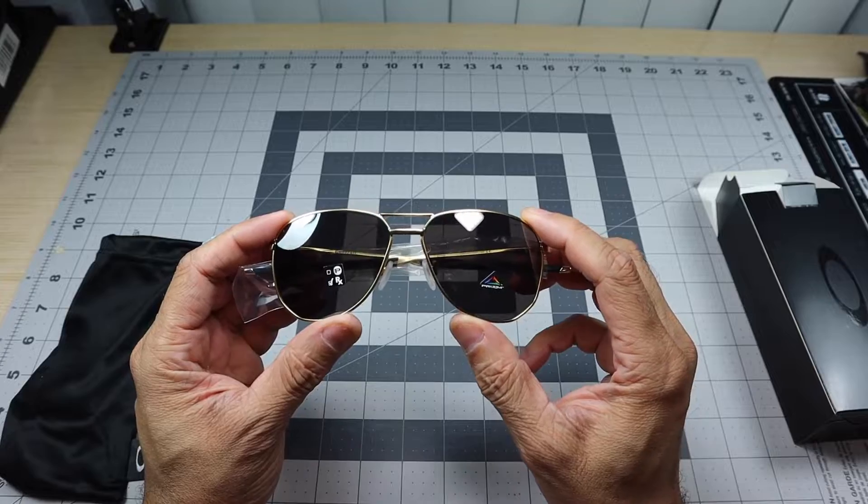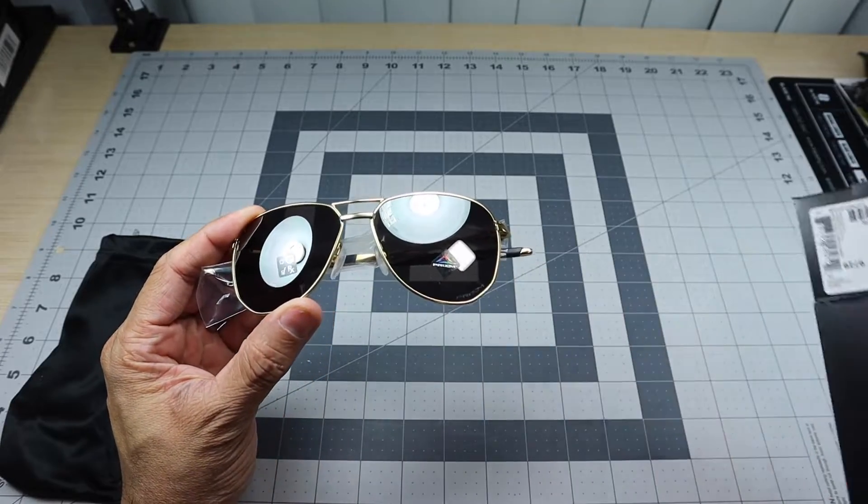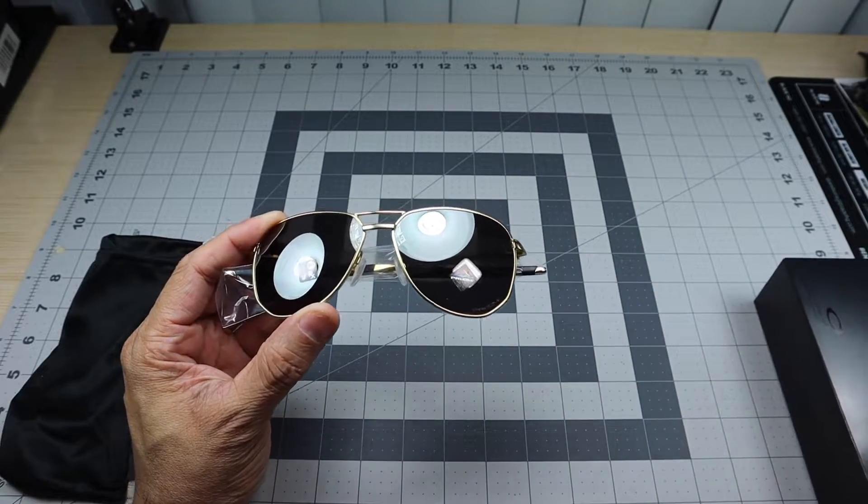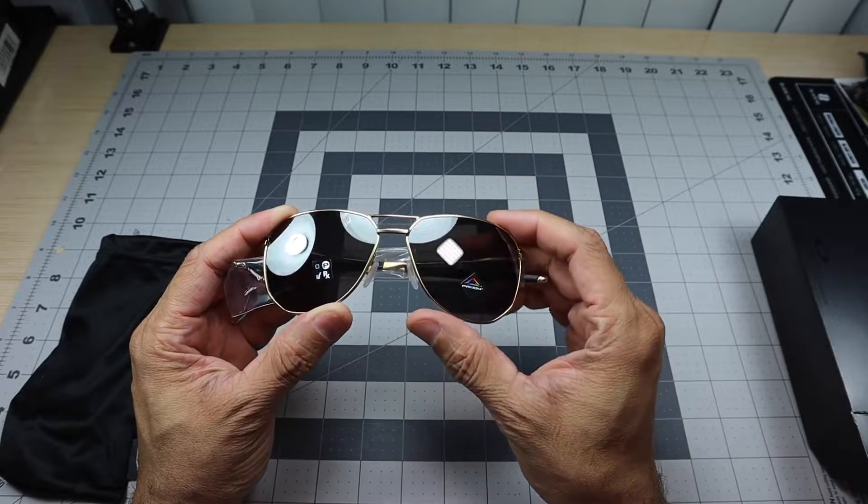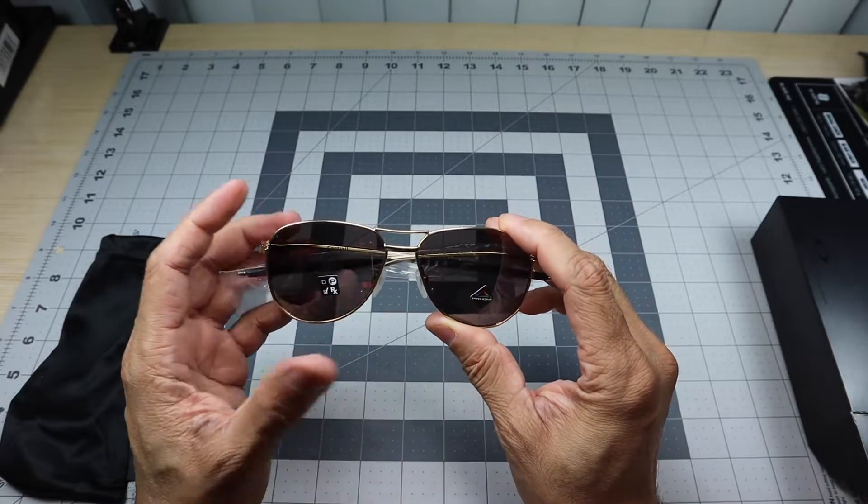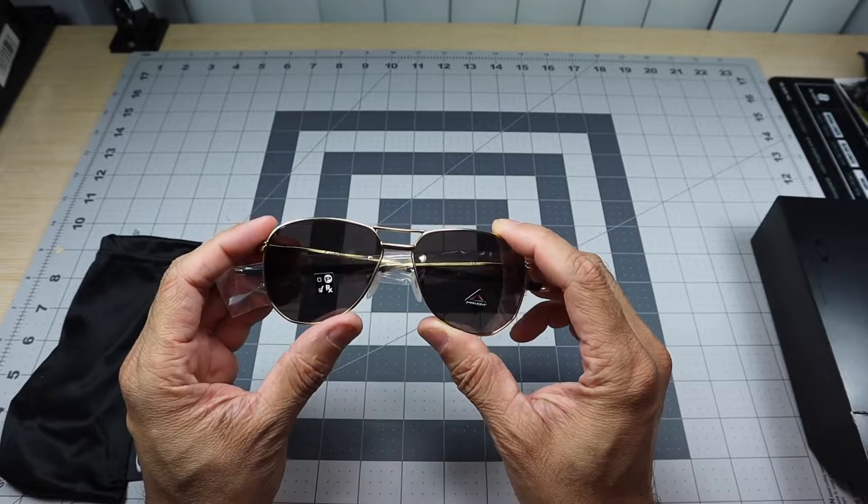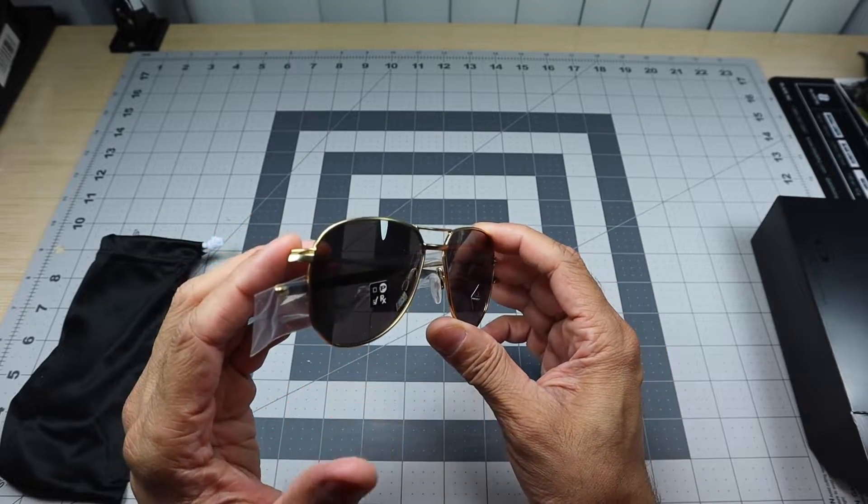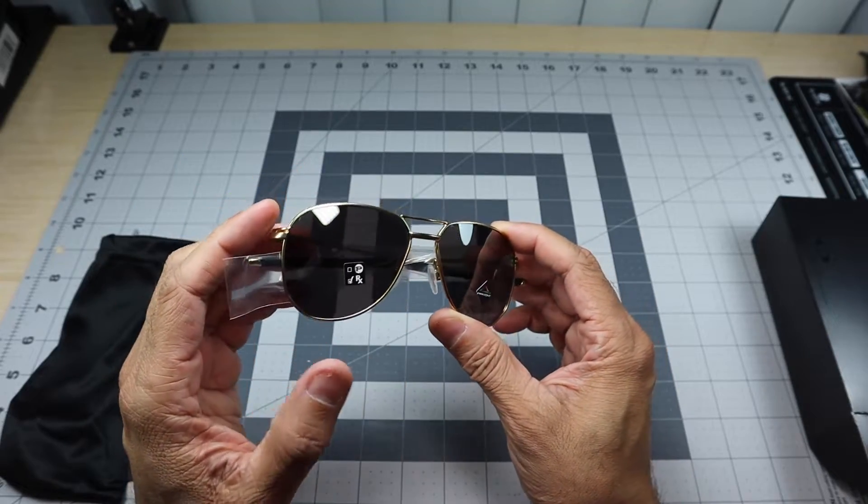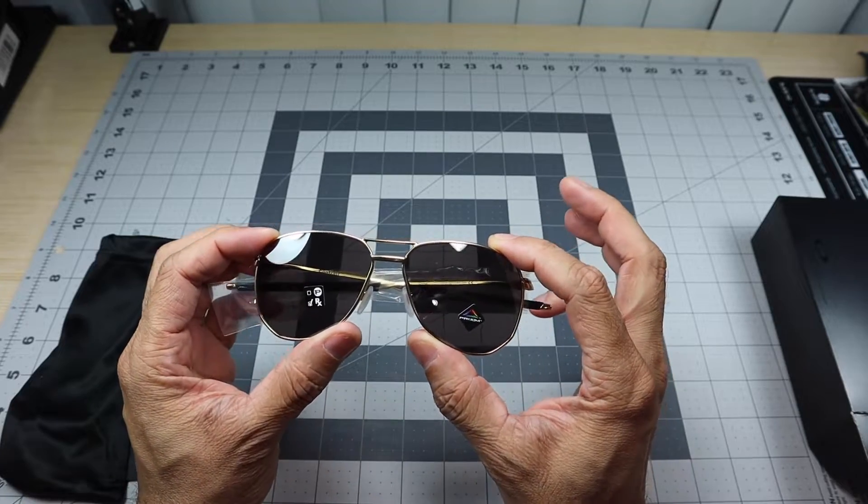This one is the gold color. Let me look at the box so I can get the exact name. The satin gold. So it's not going to be a really shiny gold. It's not like a polished gold. And it's not a matte. It's kind of in between the two colors. And then obviously the Prism Black lenses.